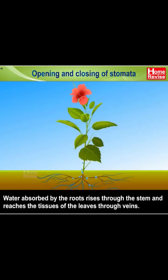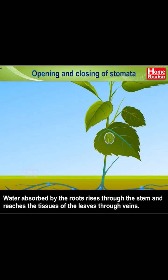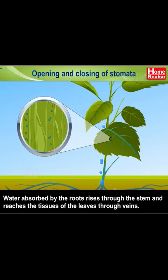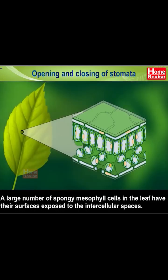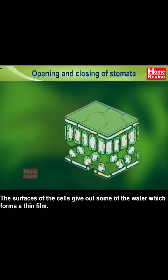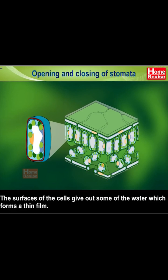Water absorbed by the roots rises through the stem and reaches the tissues of the leaves through veins. A large number of spongy mesophyll cells in the leaf have their surfaces exposed to the intercellular spaces. The surfaces of the cells give out some of the water which forms a thin film.